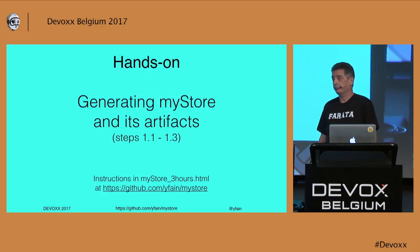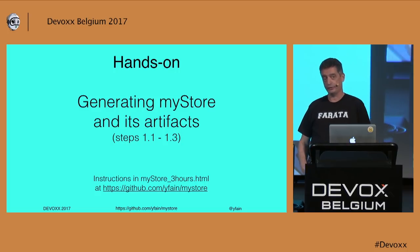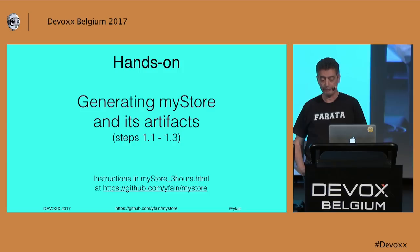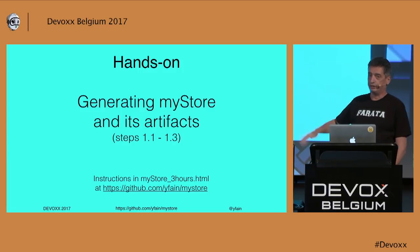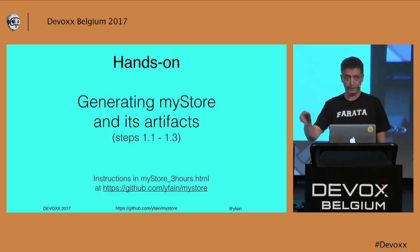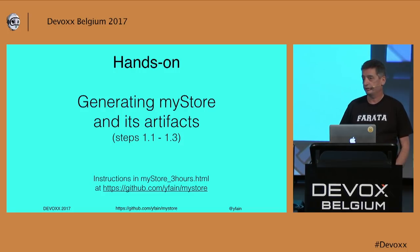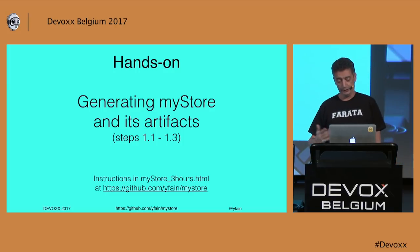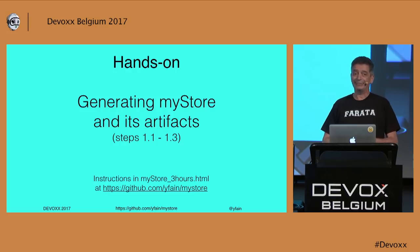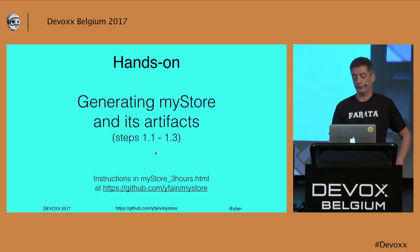Now we'll start hands-on. Enough talking — let me do something. I will generate the app, generate the components, start it, and let's see how it goes. Down there you see a URL for the link — slides are there. The instructions I will be using are there as well. In that instructions file, there are numbered sections. We will do steps 1.1 to 1.3 from the file called MyStore3Hour.html.